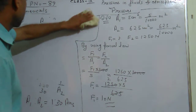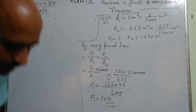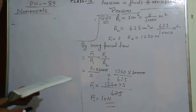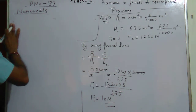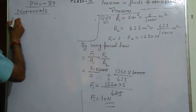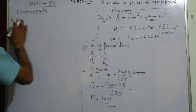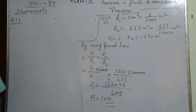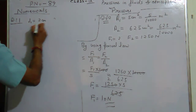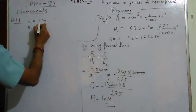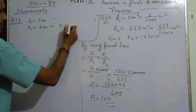Coming to question number 11. The diameter of the neck of a bottle is 2 cm, so the radius R1 equals 2 divided by 2, which is 1 cm. Convert this into meters: 1 upon 100, so R1 equals 0.01 meter.